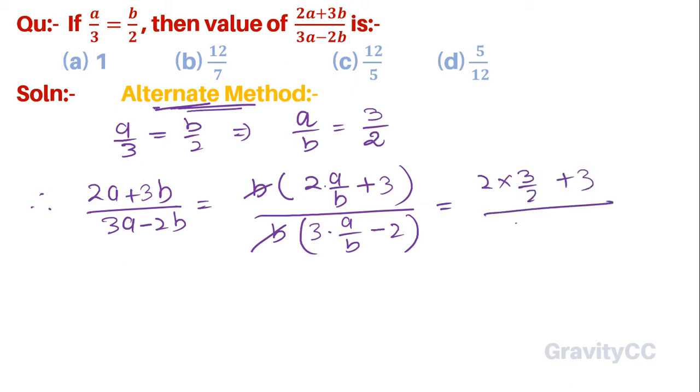This equals (6 + 6)/2 divided by (9 - 4)/2, which simplifies when 2 cancels to 12/5.